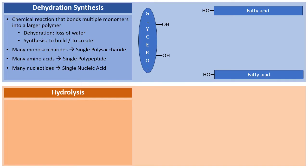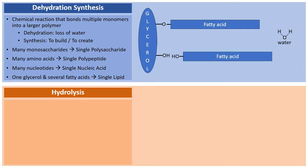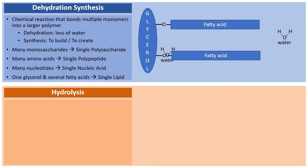In the world of lipids, lipids are built from one part glycerol and two or three fatty acids. The first fatty acid comes over to the glycerol, two H's and an O form water, water is removed, and the fatty acid bonds to the glycerol. The second fatty acid is added the same way, and the entire unit is now one larger lipid. Dehydration synthesis builds larger molecules out of smaller parts.